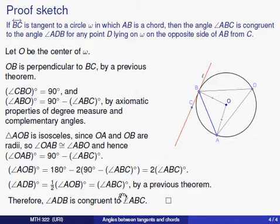Now, angles with equal degree measures are assumed to be congruent. This was one of our axioms of measurement, and so we conclude that angle ADB is in fact congruent to angle ABC as we claimed.